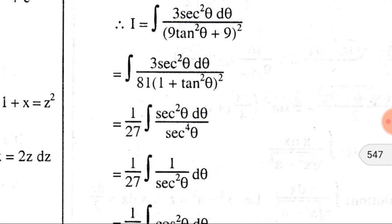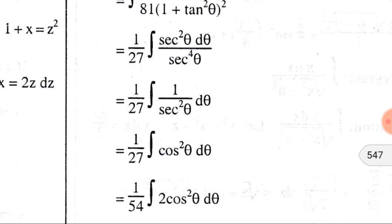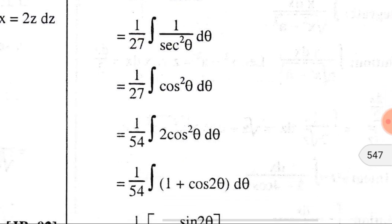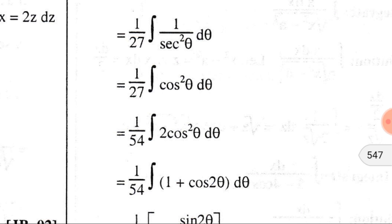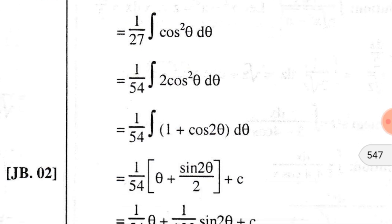So we can write (1/27)·sec²θ divided by sec⁴θ dθ, which simplifies to (1/27)·cos²θ dθ. To apply the standard formula, we write 2cos²θ = 1 + cos 2θ, multiplying and dividing by 2, so it becomes (1/54) integration of (1 + cos 2θ) dθ.